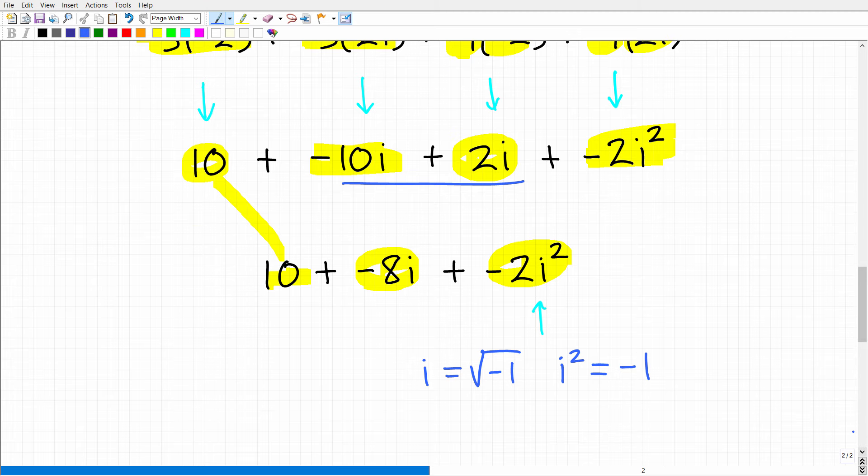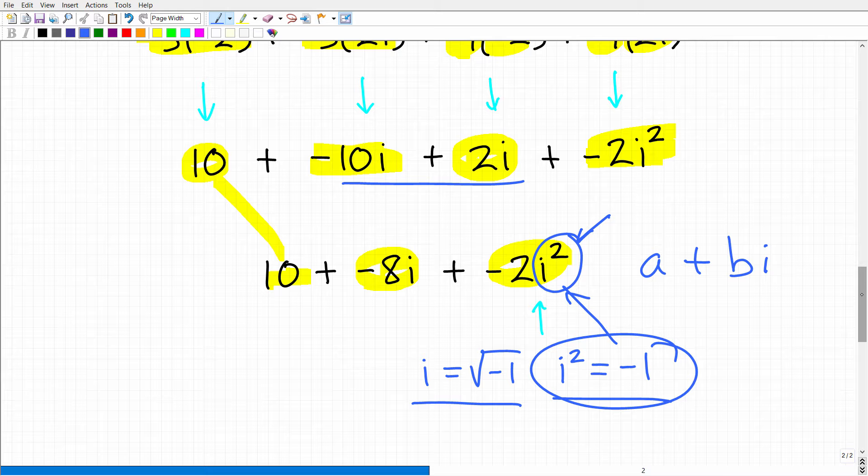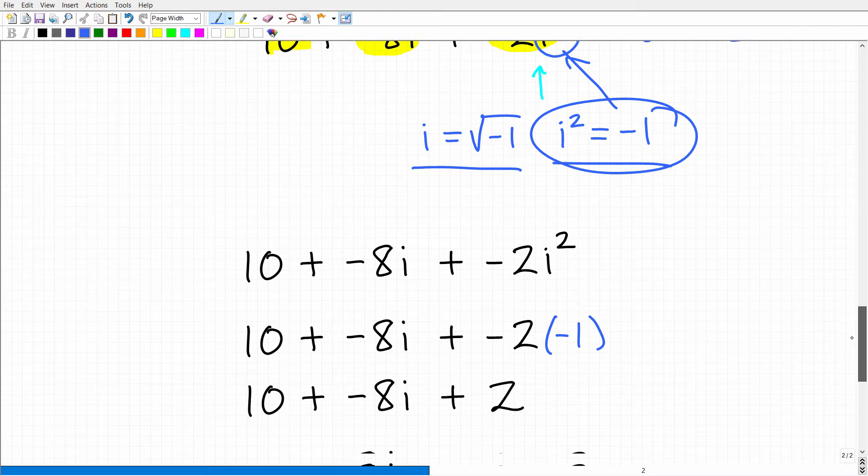So we're almost there. But the trick to getting this problem right, again, our answer is going to be an a plus bi form. But we have this i squared part right here. So we need to address that right now. And what we need to do is recall what the definition of i is. So this is the imaginary part of a complex number. So i is equal to the square root of negative 1. So if i is equal to the square root of negative 1, i squared, if we square both of these right here, is going to be equal to negative 1. So we're going to replace this i squared with a negative 1. So let's do that right now.